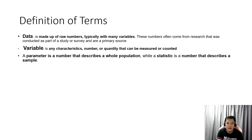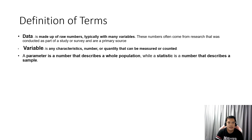On the next slide, we have data. This is made up of raw numbers that is typically with many variables. These numbers often came from research that was conducted as part of a study or survey and are a primary source. A variable, on the other hand, is any characteristic, number, or quantity that can be measured or counted. A parameter is also a number that describes a whole population, whereas statistic is a number that describes a sample.